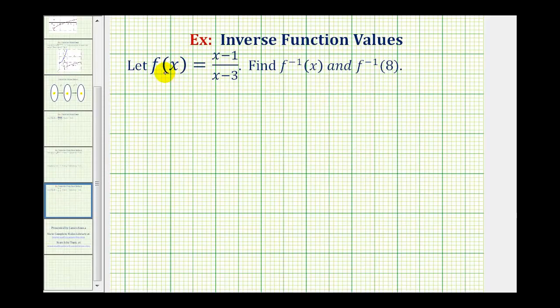To get started, we first write the original function in terms of x and y. f(x) equals y, so we have y = (x - 1)/(x - 3).